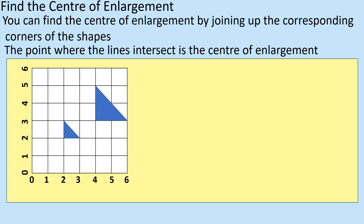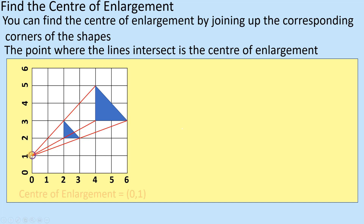So here you've got two shapes. We've seen this one already in terms of finding the centre of enlargement. What you do is take the two opposing corners of the shapes — the ones that correspond — draw a line through them and carry on. You do that for the other two points as well. Take the bottom right corner of each shape, draw through them, and you'll see the centre of enlargement is going to be at zero.